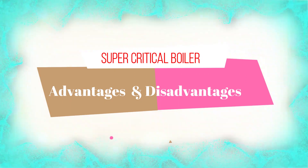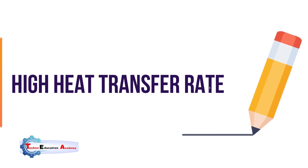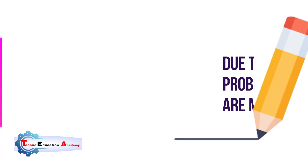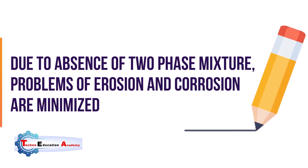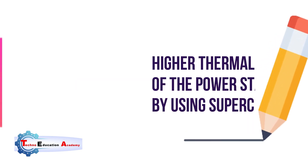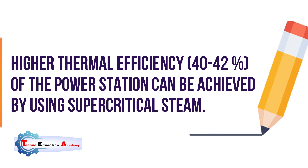Now we will discuss the advantages of the supercritical boiler. First, heat transfer rates are considerably higher compared with subcritical boilers, because both the temperature range and pressure range are high. Due to the absence of a two-phase mixture, the problems of erosion and corrosion are minimized — above 221.1 bar there is no phase separation. The pressure level is more stable due to less heat capacity of the generator, giving better response. Higher thermal efficiency can be achieved — up to 40 to 42 percent — at thermal power stations using supercritical steam.